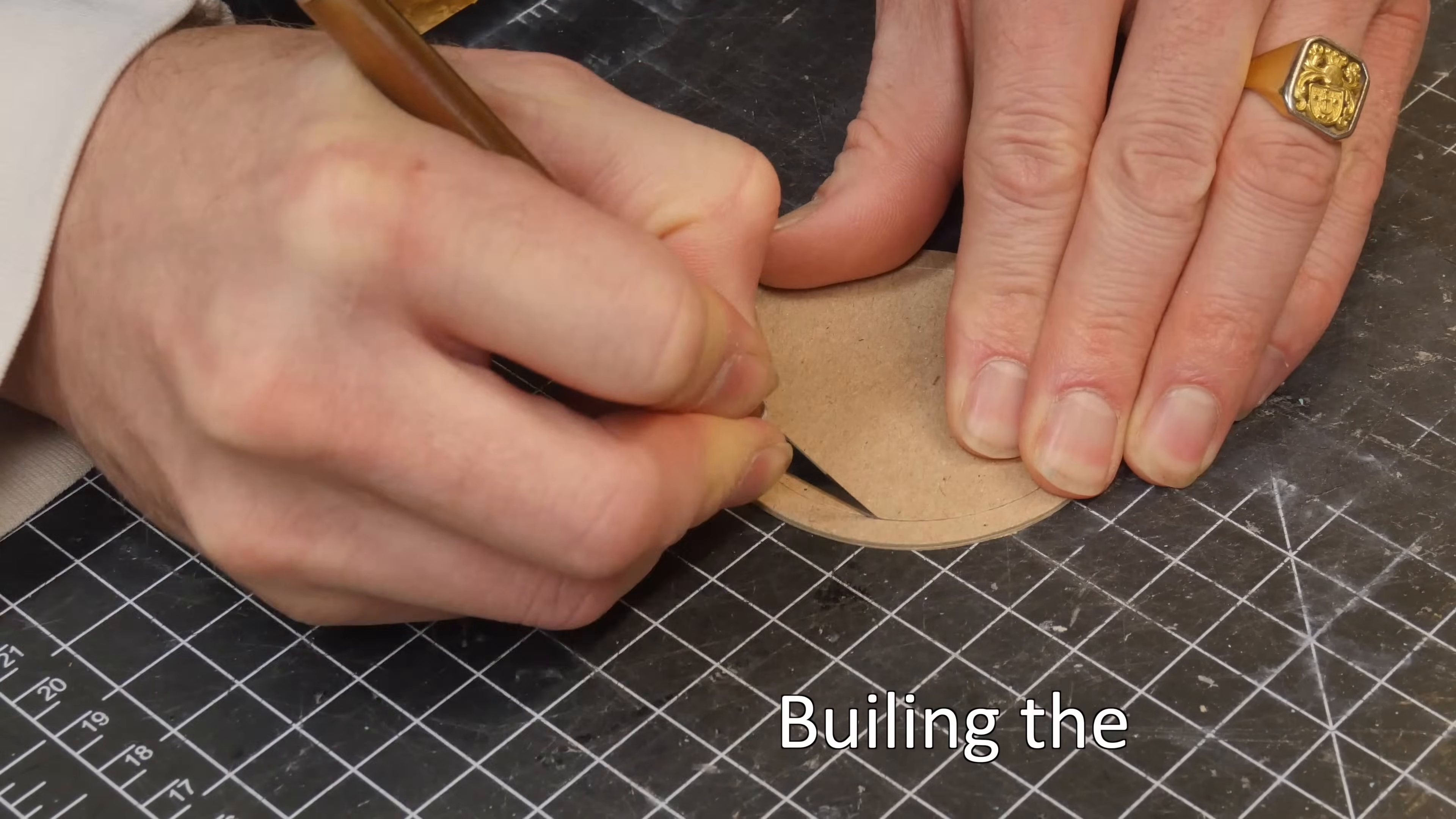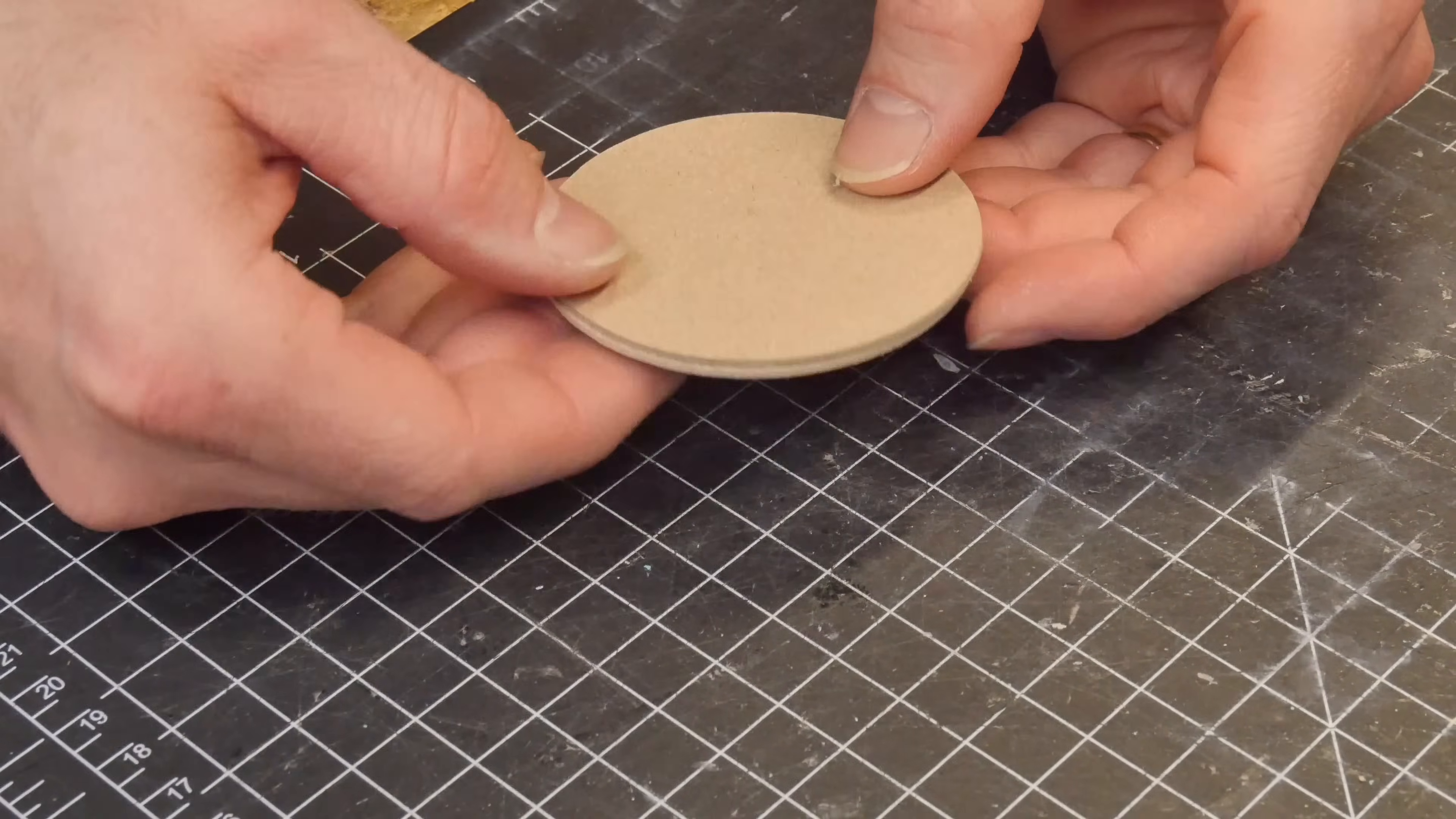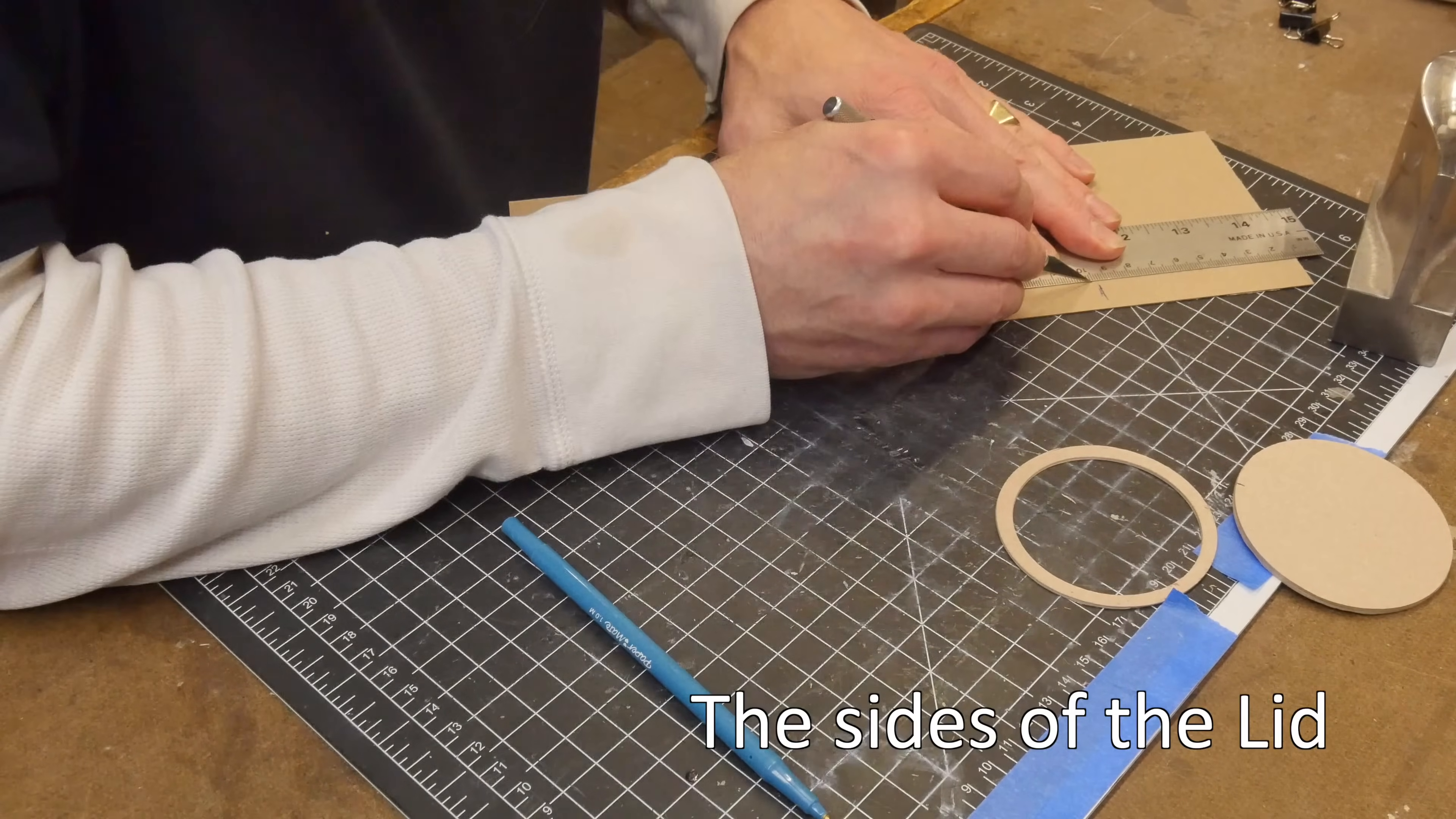That should give you a really nice base for your container. Let's move on to starting to build the lid. I'm going to take two bigger circles and laminate them together. It'll become apparent why I do this a little bit later on in the video. So I have one ring and one solid which is going to become the top.